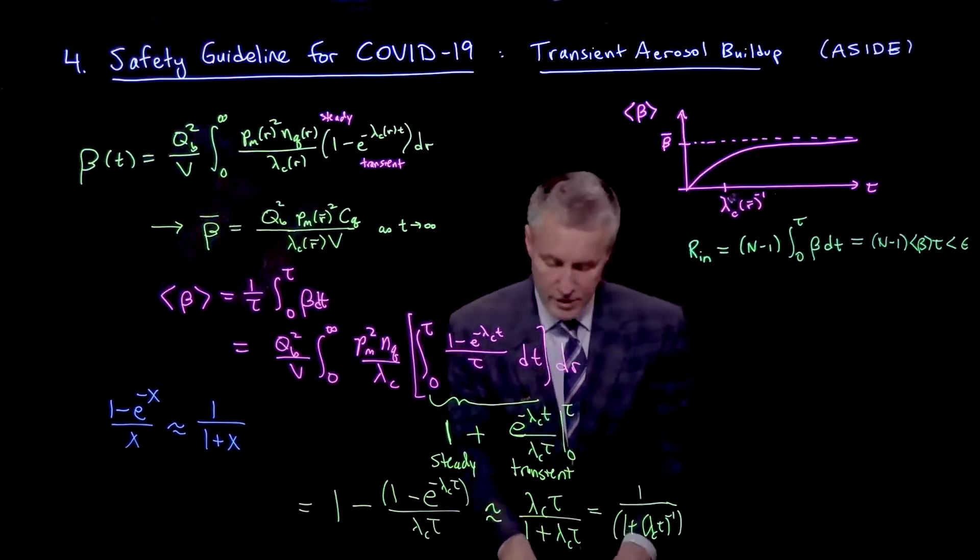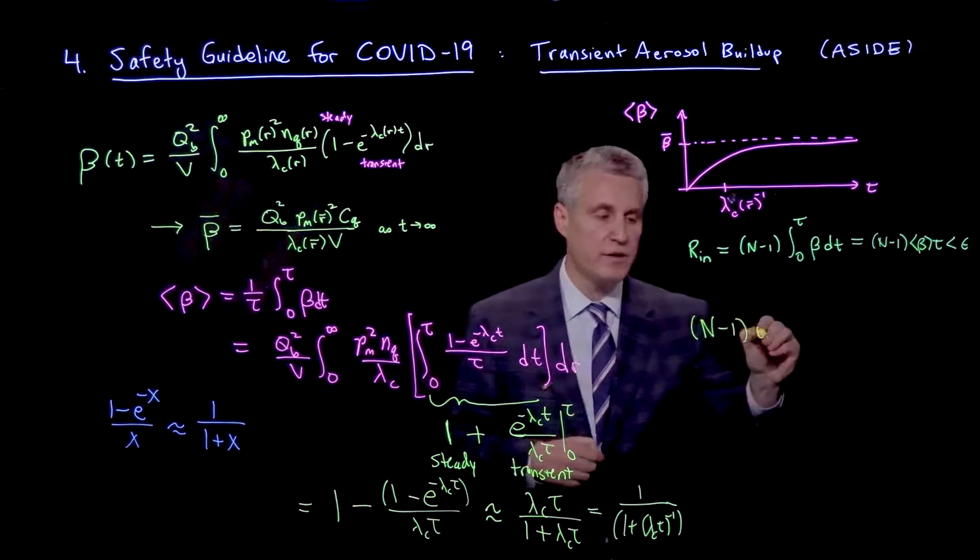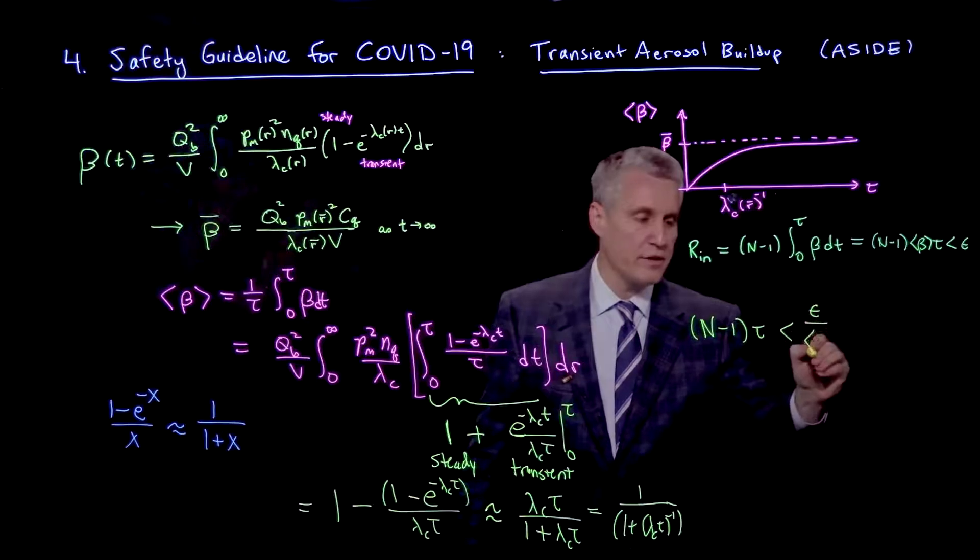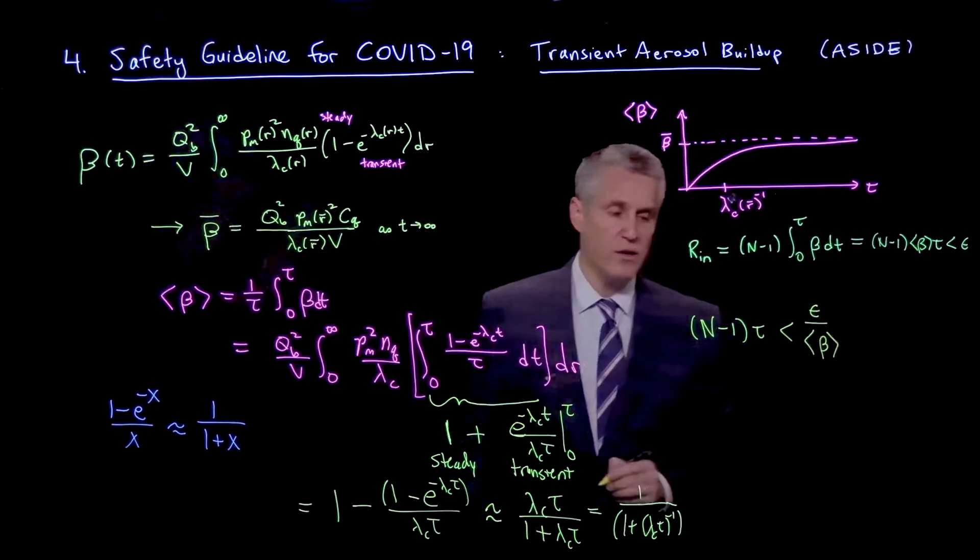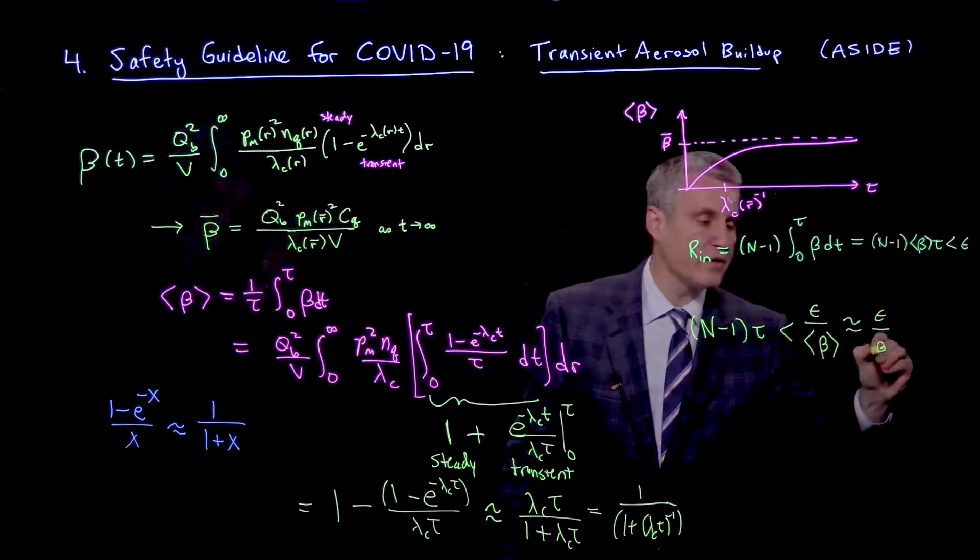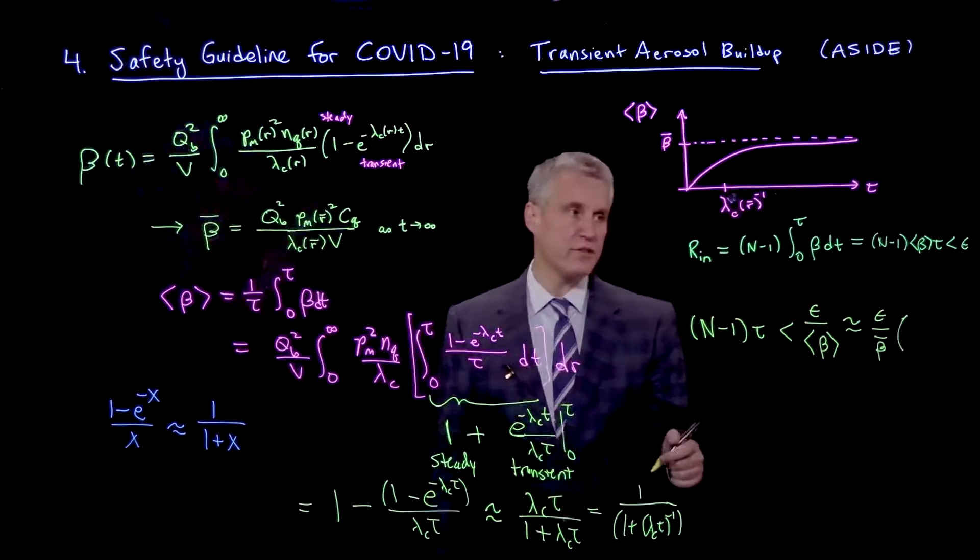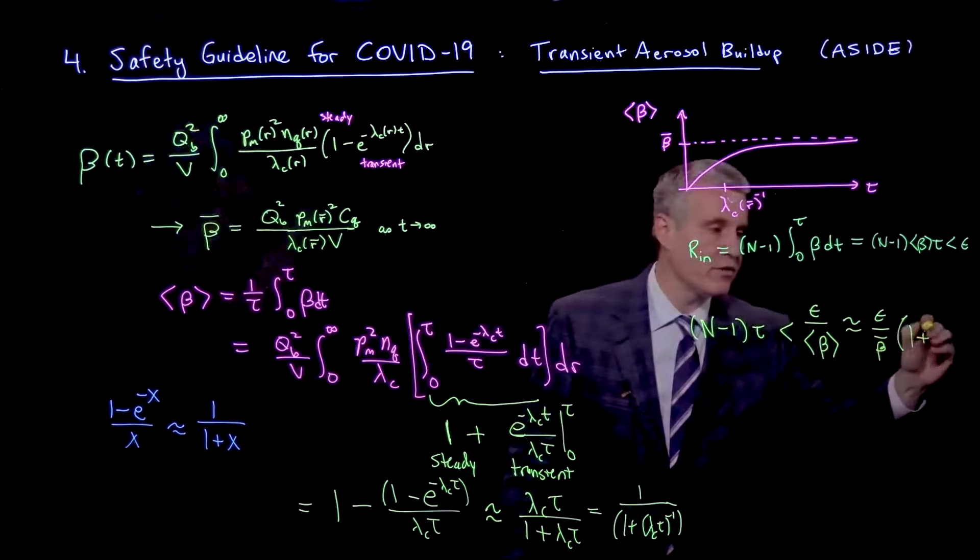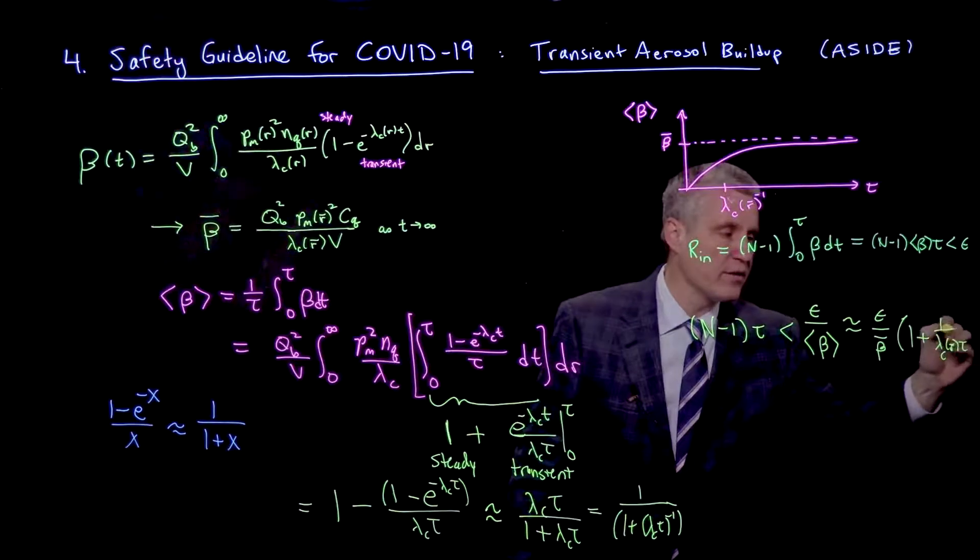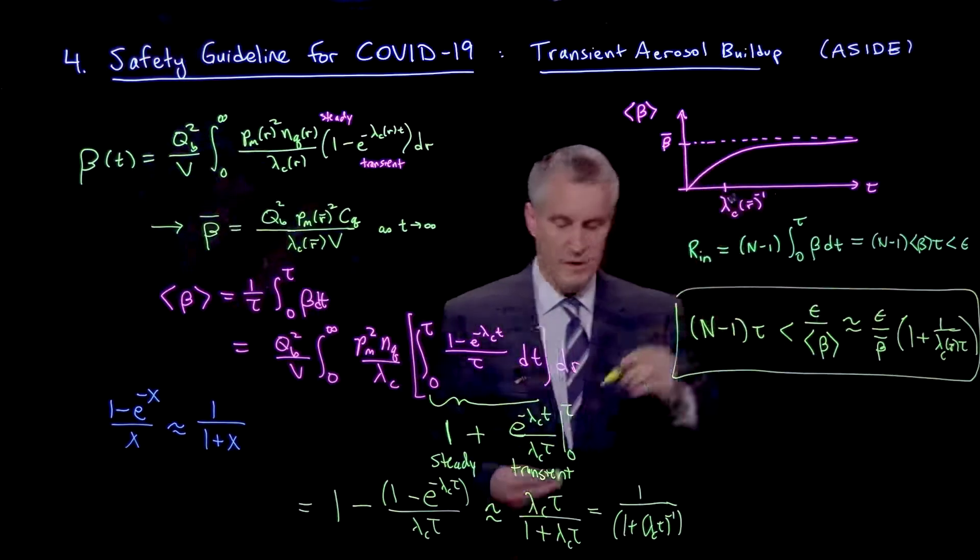So I can then write that my guideline now has a modified form, which is that n minus 1 times tau is less than epsilon over the time average beta up to time tau. And this is approximately equal to epsilon over beta steady state times this factor here. If I multiply that to the other side, I just get 1 plus 1 over lambda c of r bar tau.